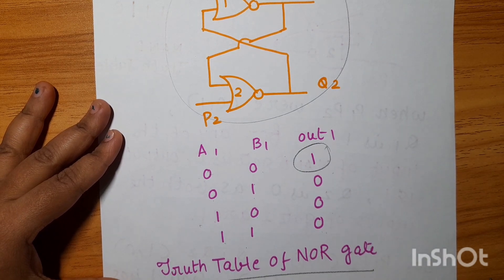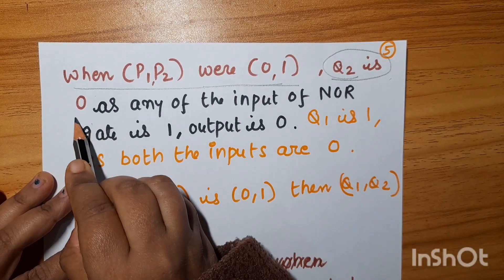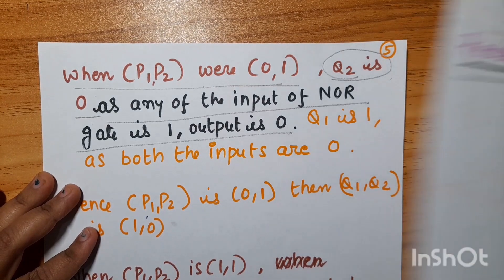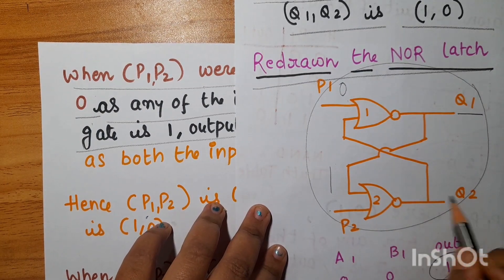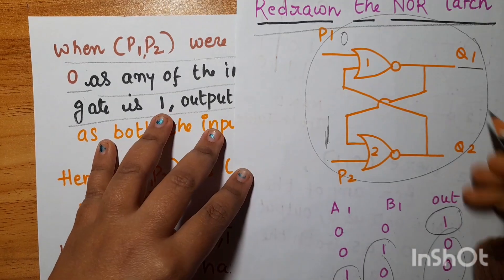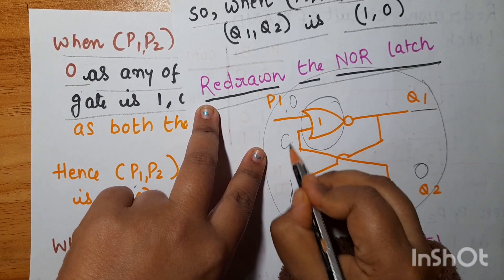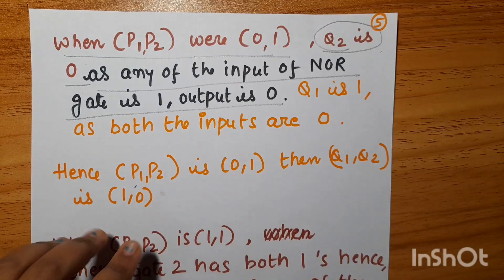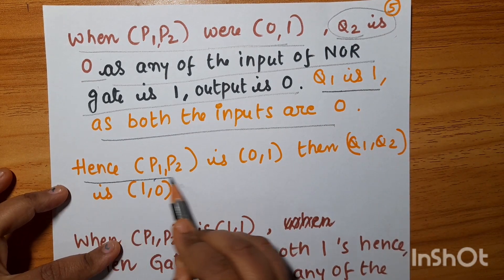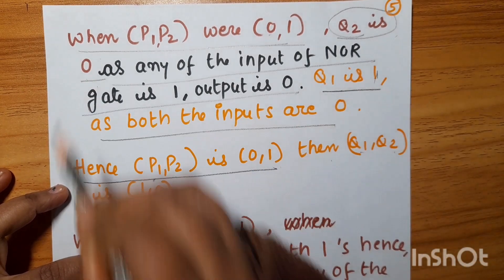When P1,P2 is 0,1: Q2 is 0 because any input of the NOR gate being 1 gives output 0. Since P2=1, the NOR gate output is 0, so Q2=0. For gate 1, both inputs are 0,0 so Q1 is 1. So when P1,P2 is 0,1, Q1,Q2 is 1,0.